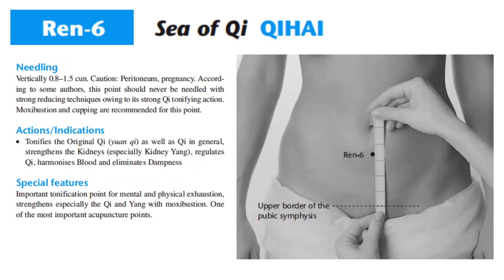Moxa and cupping are recommended for this point. Actions and indications: tonifies the original qi, or yuan qi, as well as qi in general; strengthens the kidneys, especially kidney yang; regulates qi; harmonizes blood; and eliminates dampness. Special features of REN6: it is an important tonification point for mental and physical exhaustion, and strengthens especially the qi and yang with moxibustion — one of the most important acupuncture points.